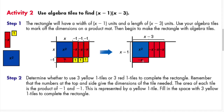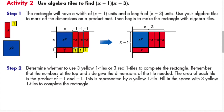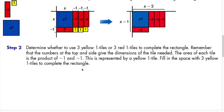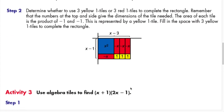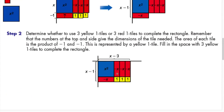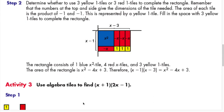We first place the x² tile, then the three negative x-tiles. Step 2: determine whether to use yellow or red unit tiles. Since you're multiplying a negative times a negative, it becomes positive — that's why you end up with three yellow unit tiles. Looking at the product mat: one x² tile, four red tiles (negative 4x), and three positive units gives x² − 4x + 3.